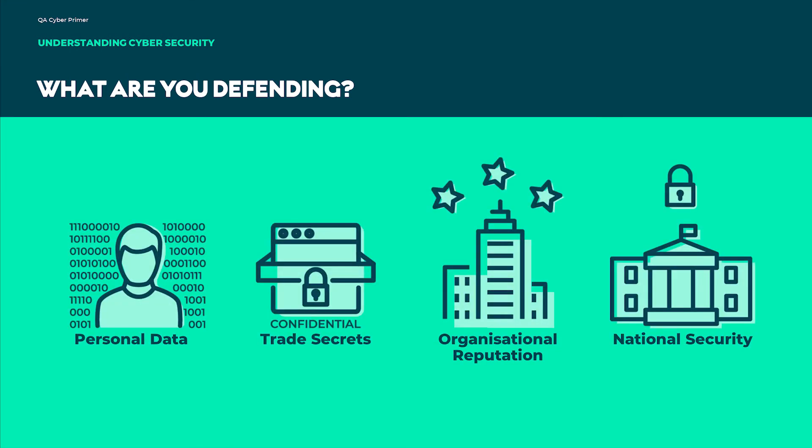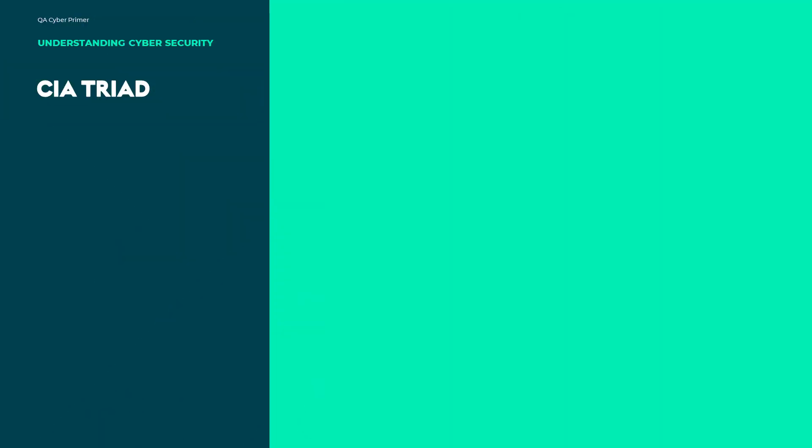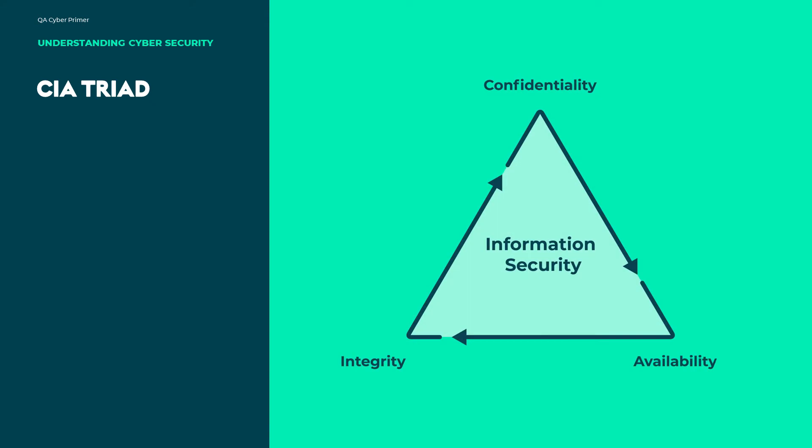The seriousness of the threat of attack in cybersecurity warrants reflection on what it is you are defending. An information security management system, or ISMS, is often used in organisations to defend against attacks. There are three aims of any ISMS: to create conditions in an organisation which safeguard the confidentiality, integrity, and availability of information and of the systems that carry them.